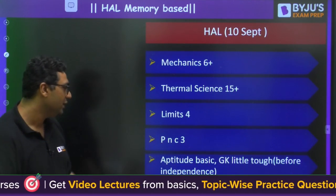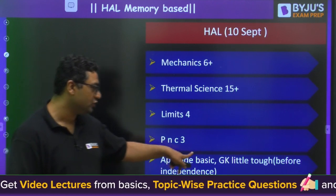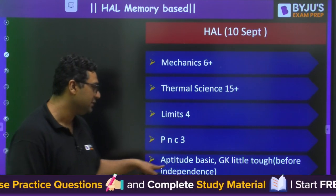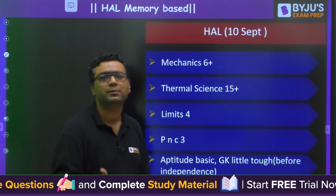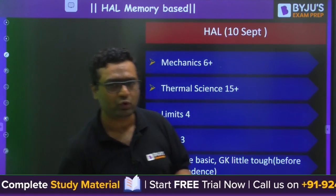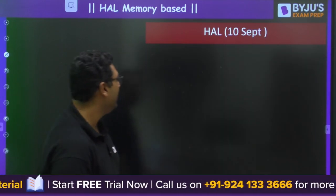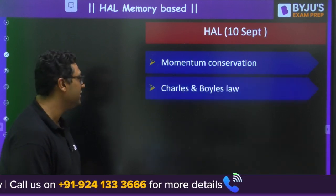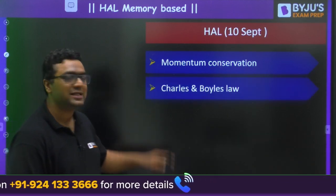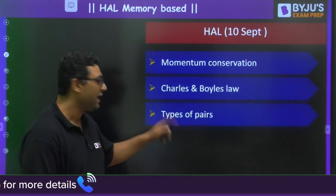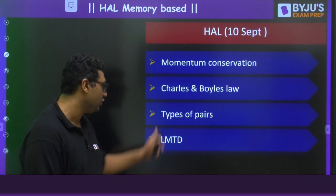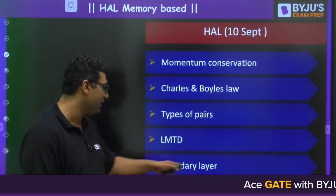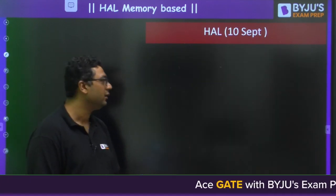Aptitude was of basic level. GK was a little difficult — for history they asked major things before independence or before 2000. They also asked from momentum conservation, Charles's and Boyle's law, thermodynamics, types of pairs, and the LMTD method from heat transfer.